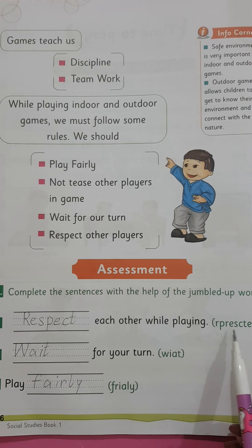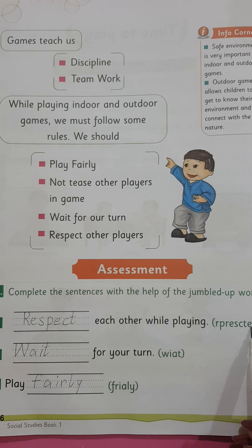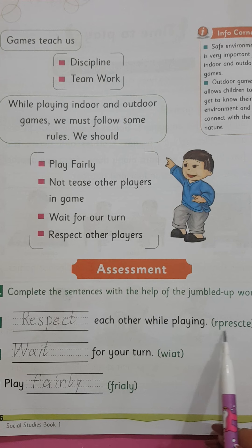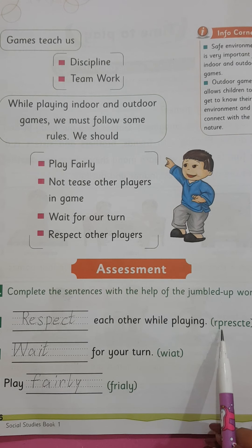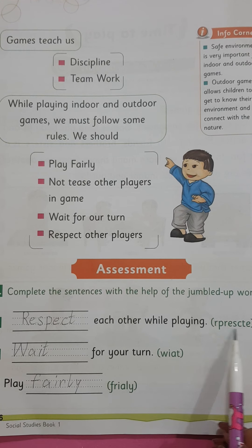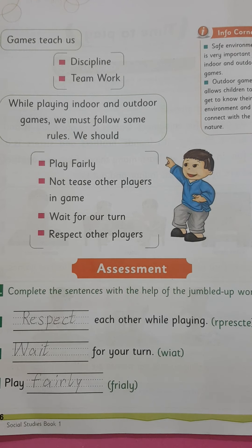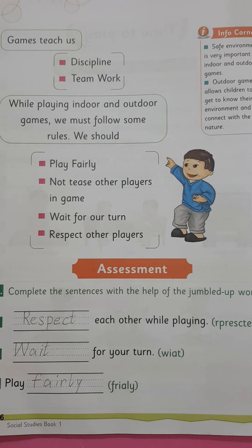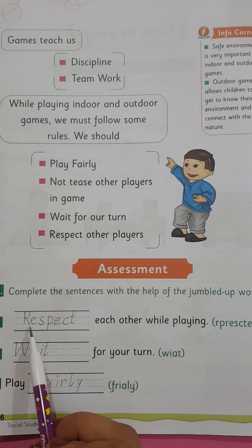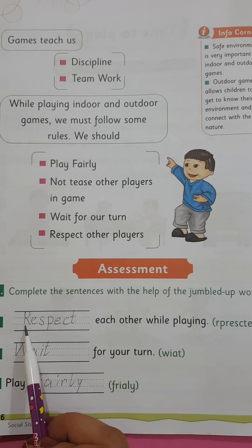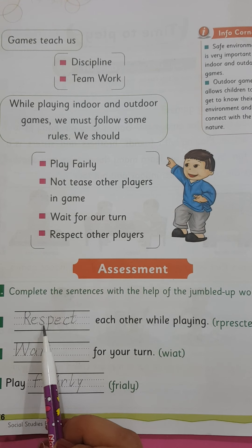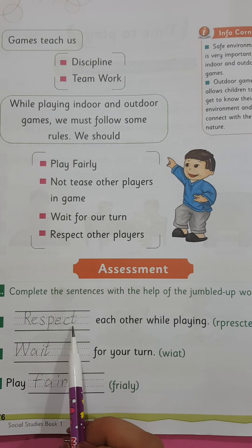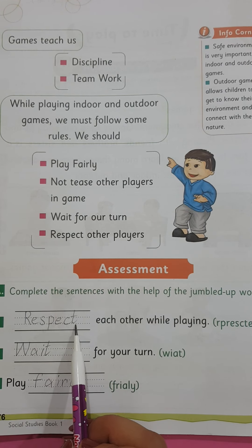The first one is: dash each other while playing. The letters r, p, e, c, t, s are jumbled. We will correct them and write the word in the correct order: R-E-S-P-E-C-T — 'respect.' So the answer is: respect each other while playing.